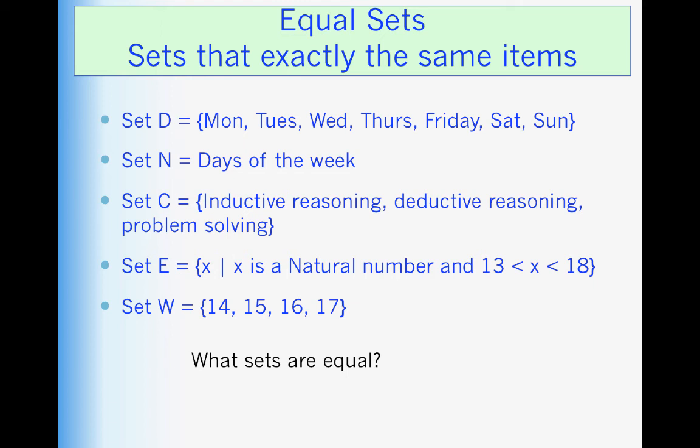Equal sets, on the other hand, have exactly the same items in them. So which sets are equal? Well, D and N are equal because they each have all the days of the week. Set E and W are equal because they contain exactly the same numbers.